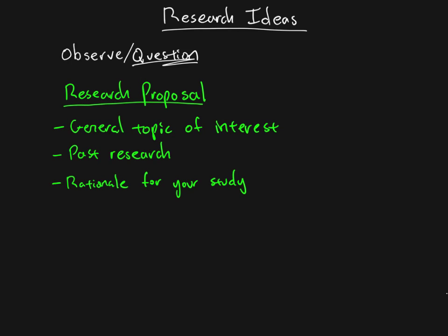The rationale means you're saying: here's what people have already found out, but there are limitations — something we don't yet know, some unanswered question — and here's why it's an important question. You go through an argument to say why that thing is important to study, and that gives you the rationale for your study. This all goes into the proposal you're making: you want to do research, and here's why.